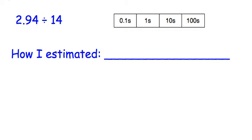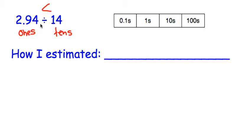In this next problem, we have a first number that's in the ones place and a second number that's in the tens place. That's telling us that 2.94 is a smaller number than 14. When the first number is smaller than the second number, there's not going to be a lot of dividing — we're basically going to be making a fraction. So let's round 2.94 to the nearest whole number, which would be 3, and we're going to divide by 14.